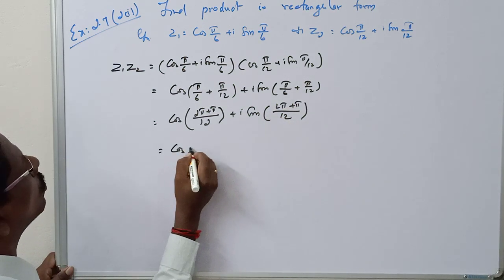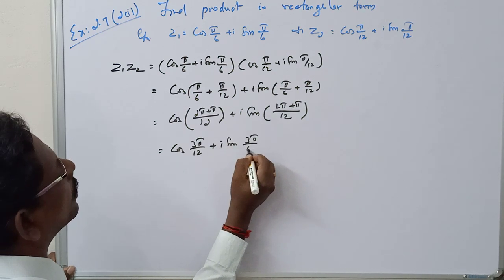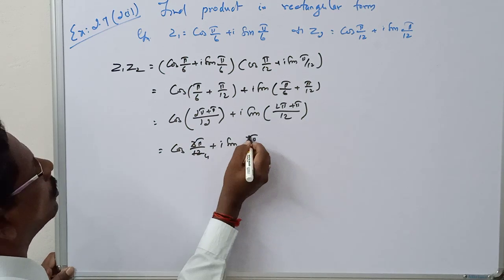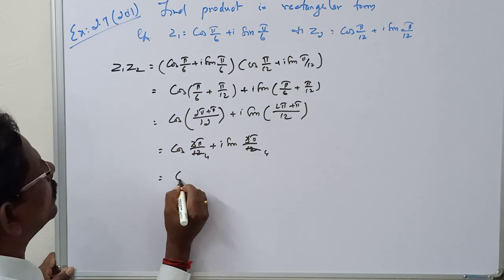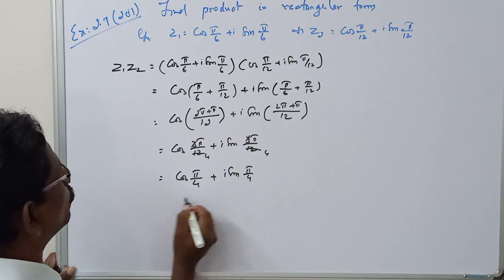It is equal to cos 3π/12 plus i sin 3π/12. Canceling by 3: cos π/4 plus i sin π/4.